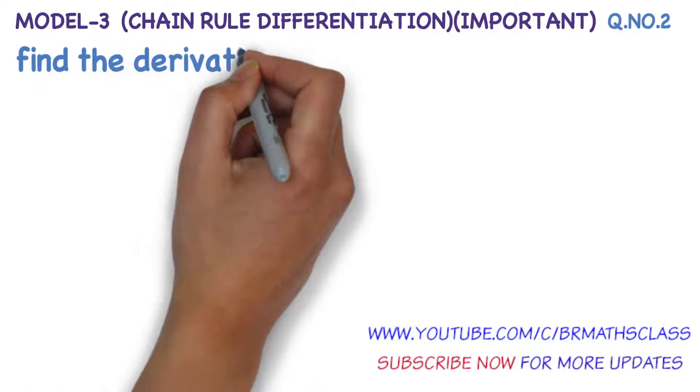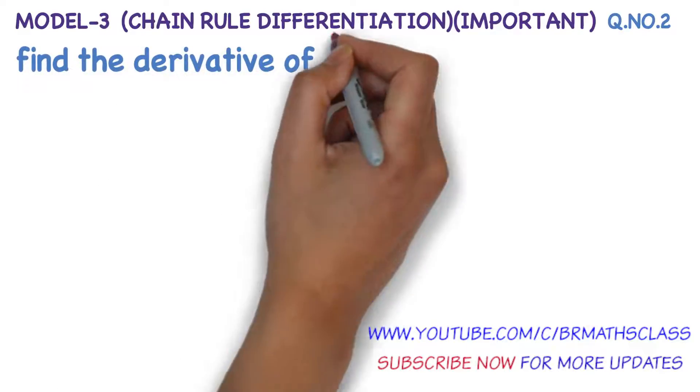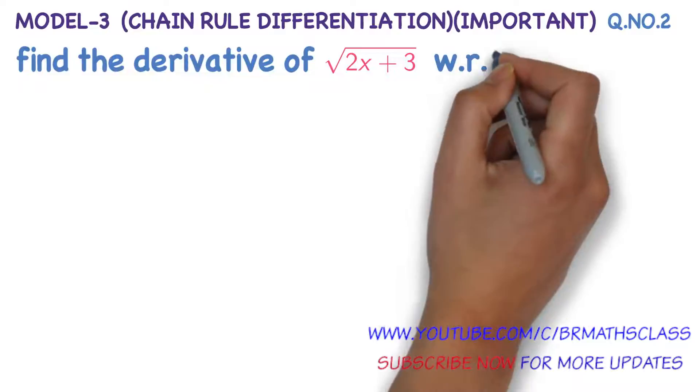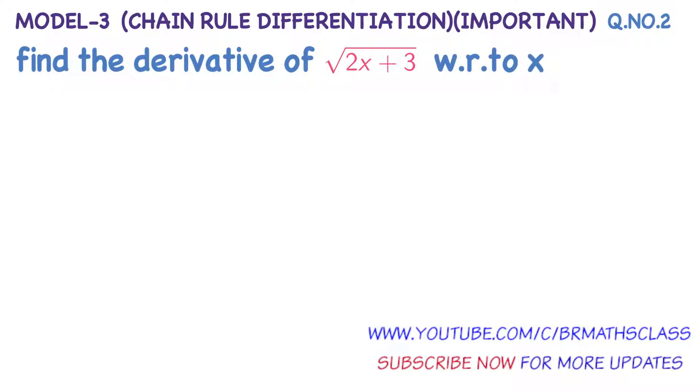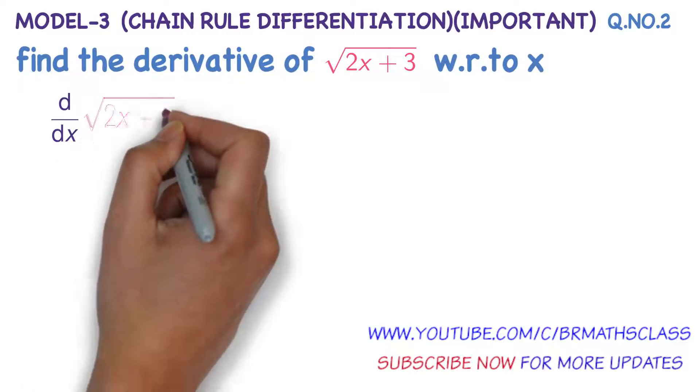Find the derivative of square root of 2x plus 3 with respect to x. Derivative with respect to x we write it as d by dx. It means derivative with respect to x, derivative of square root of 2x plus 3.